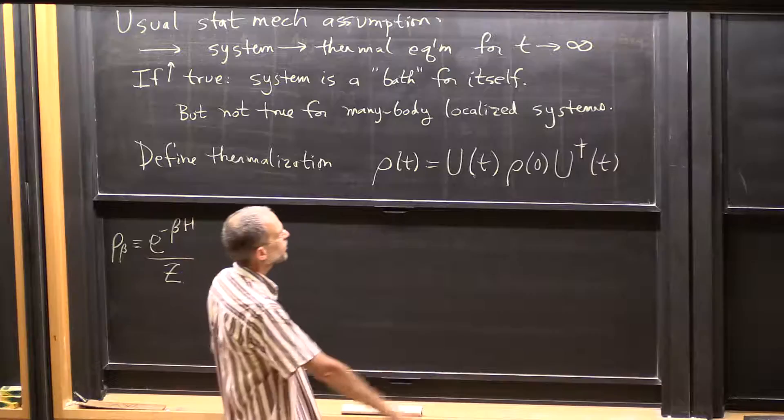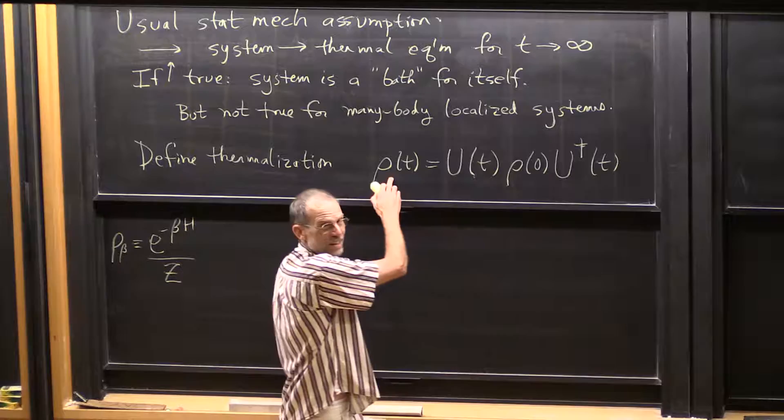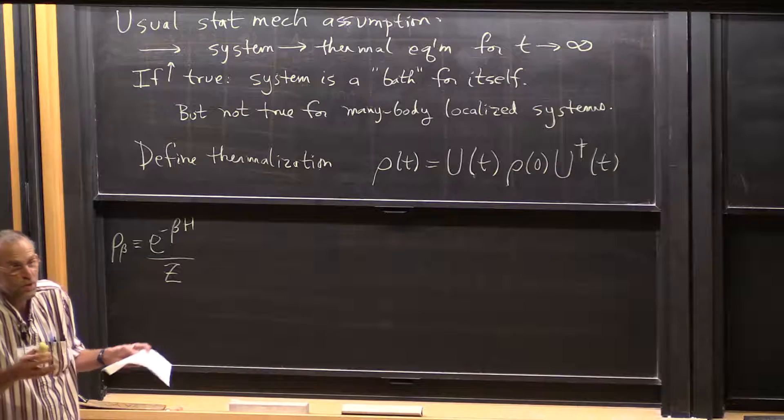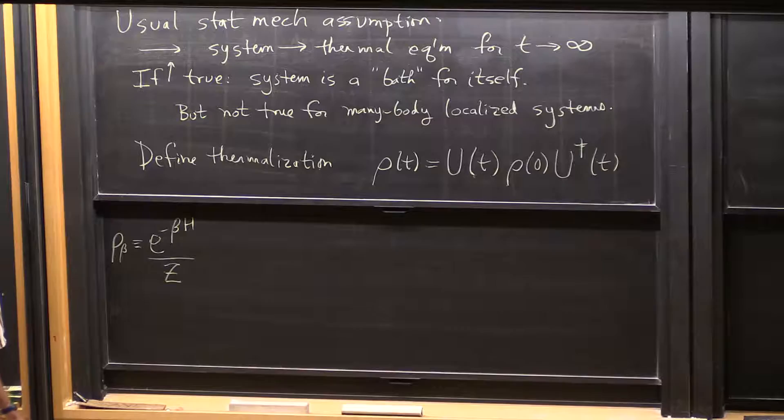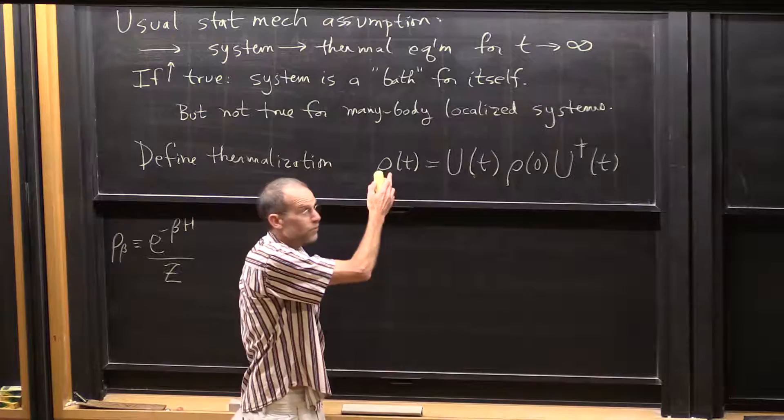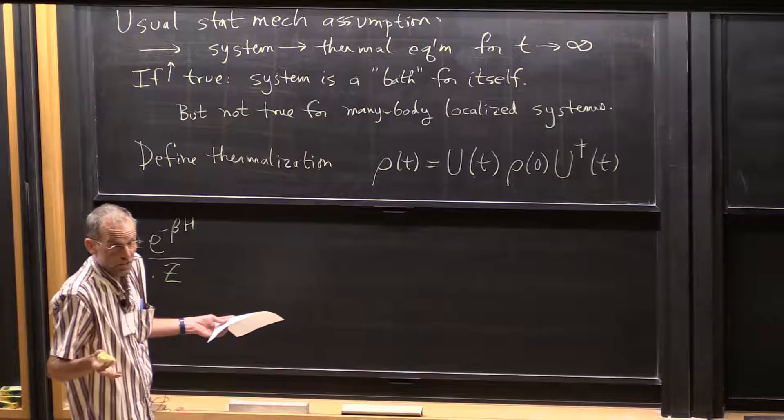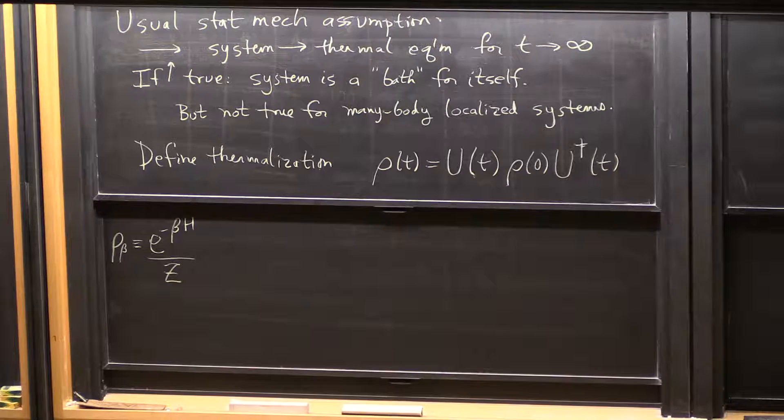For example, let's start it in an eigenstate of the Hamiltonian. Then it just stays in the eigenstate — it doesn't go to equilibrium, doesn't go to any of the familiar distributions from statistical mechanics. And I could time average, and of course rho of t would be time-independent in that case. In fact, if I do the time average, I just get the diagonal ensemble. And that doesn't have to be one of the standard ensembles of statistical mechanics.